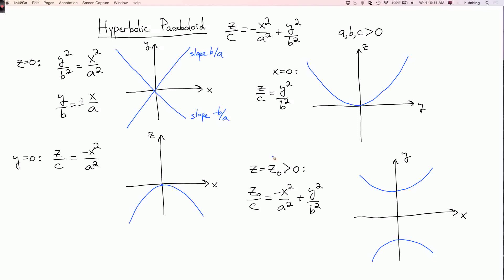And if I set z₀ to be negative, so if I take the intersection with a horizontal plane below the xy plane, then I'm going to get the other kind of hyperbola that intersects the x axis, but not the y axis.